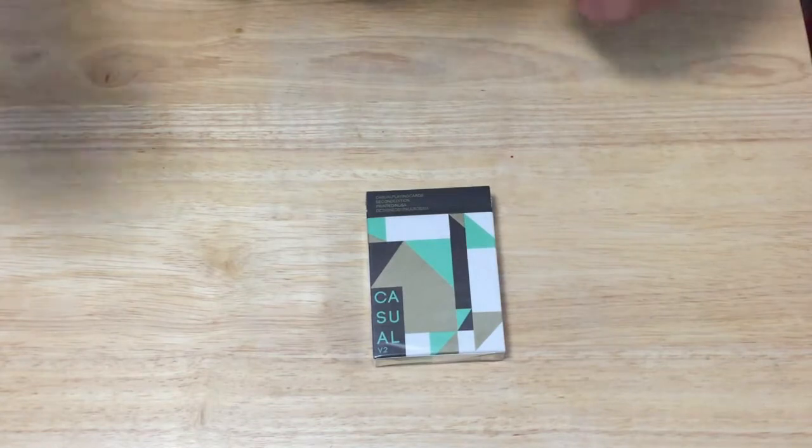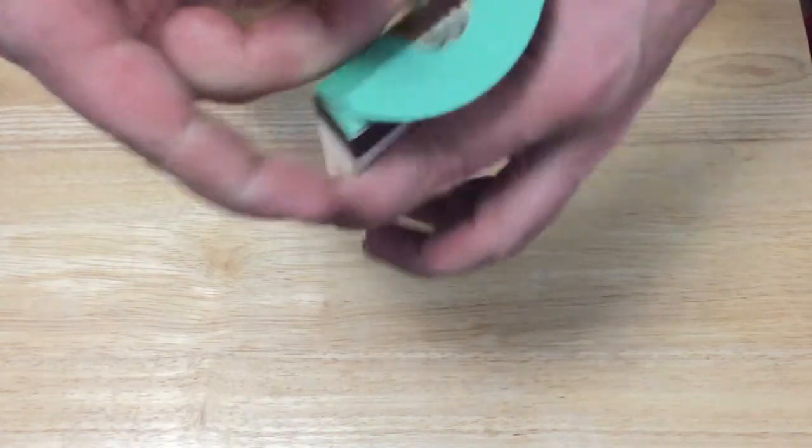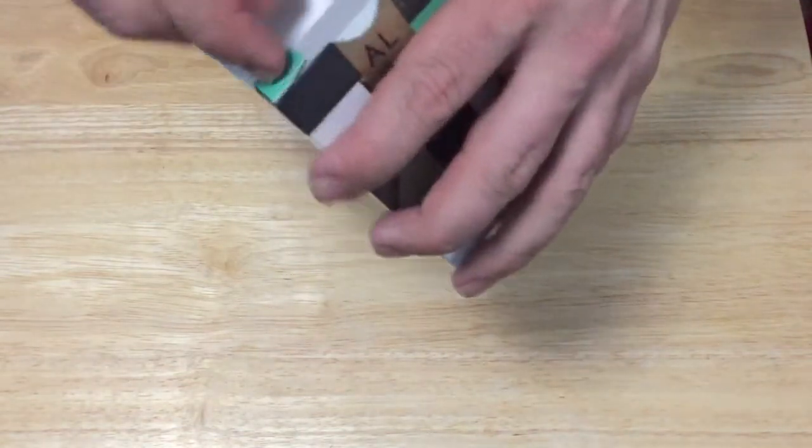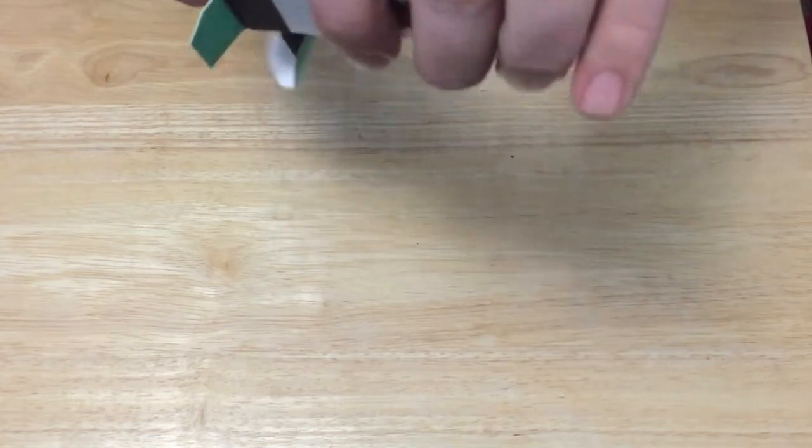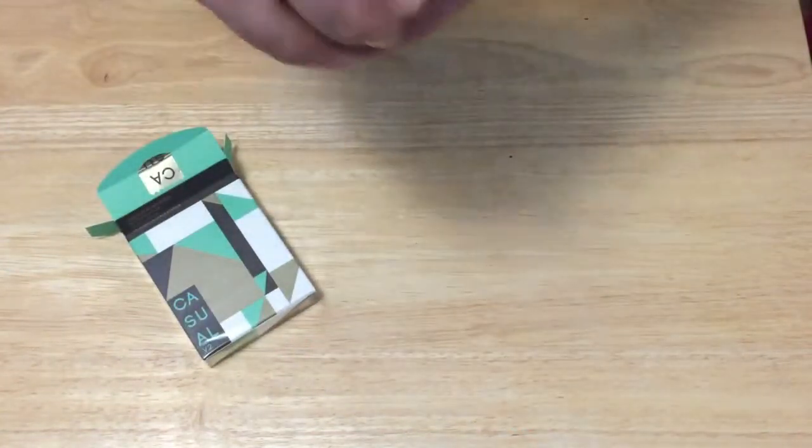It's the same company that does all the tuck cases for 311 and Dan and Dave and whatnot. Same company. I just don't know which one it is for some dumb reason. The flap is green right from the top. Standard kind of a matte finish for the rest of the tuck case. Aside from that, let's get to the cards.